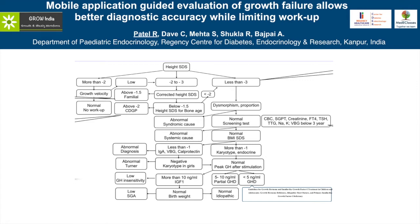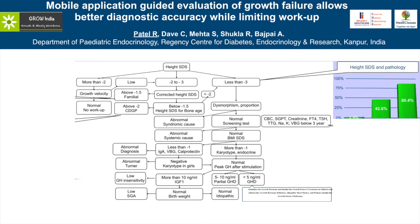Based on information including height SDS, corrected height SDS, height SDS for bone age, and BMI SDS, we have developed a clinical algorithm based on our own clinical data from a large number of children. The first level depends on the level of standard deviation score. Based on our findings, the chances of pathology increase significantly: around 2.5% below minus 2 SDS, 42% between minus 2 and minus 3, and 80.4% beyond minus 3. We therefore use less than minus 3 SD as a criterion requiring significant evaluation for pathology.